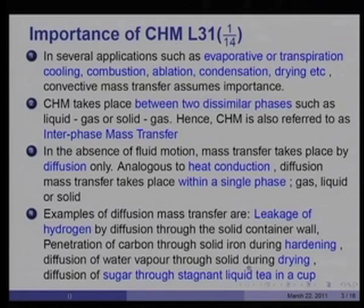Diffusion of water vapor through a solid during drying is also an example of diffusion mass transfer. Imagine you have a tea cup with sugar in a stagnant liquid. After a while, the tea turns sweet because the sugar dissolves and diffuses through the tea. In order to hasten this rate of diffusion, you stir it, which essentially means you are bringing about convective mixing rather than diffusive mixing. That is the difference between convection and diffusion — the convective rates are much higher than the diffusion rates.